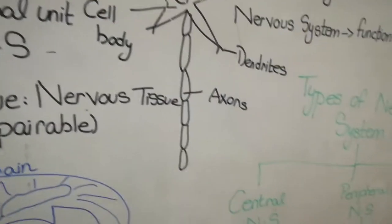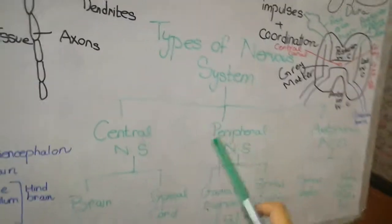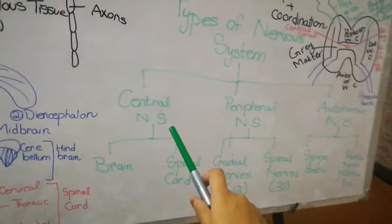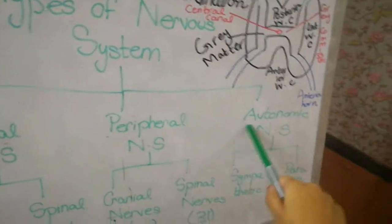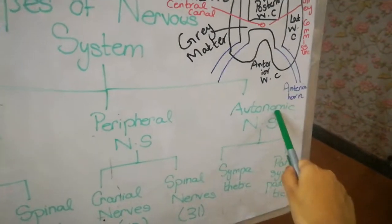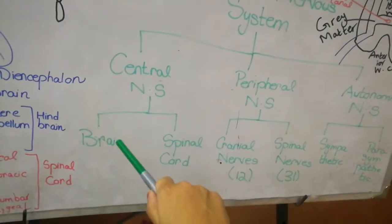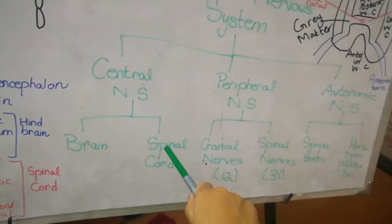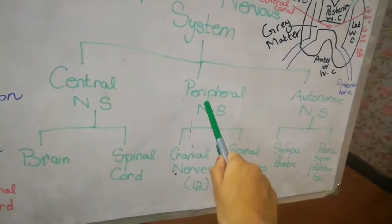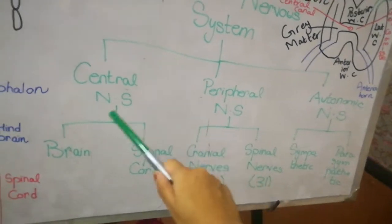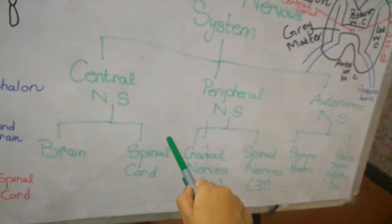Now we will come to the types of the nervous system. The nervous system is further classified into three types. Number one: central nervous system. Number two: peripheral nervous system. Number three: the autonomic nervous system. The central nervous system consists of your brain and spinal cord. The peripheral nervous system consists of your nerves — the cranial nerves that move out from your brain and the spinal nerves that move out from the spinal cord.